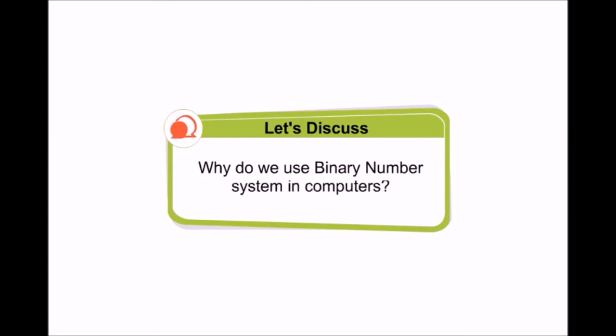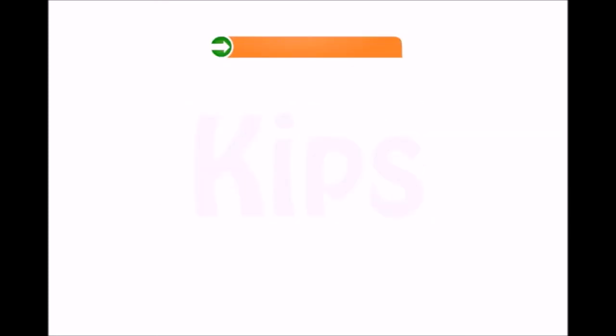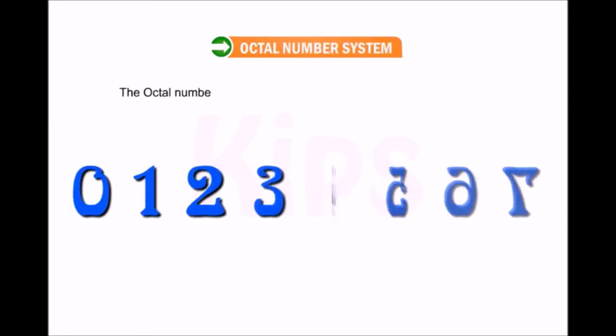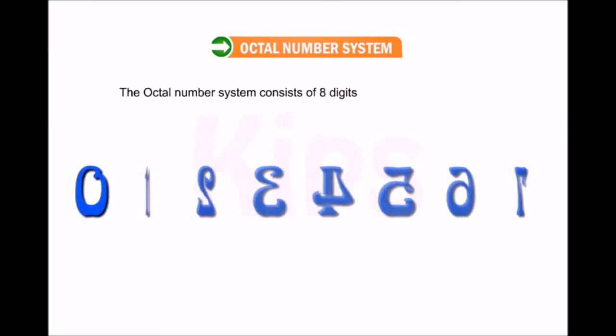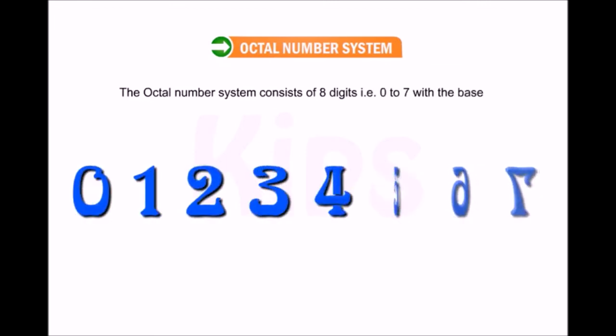Now let us learn about the octal number system. The octal number system consists of 8 digits, that is 0 to 7, with the base 8.